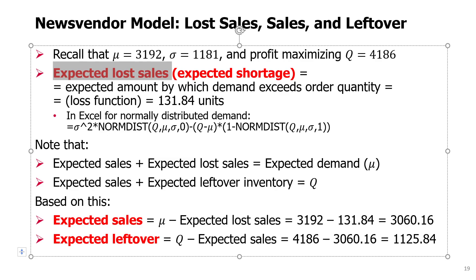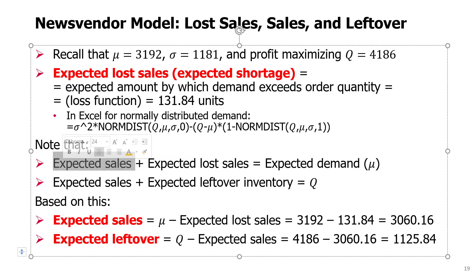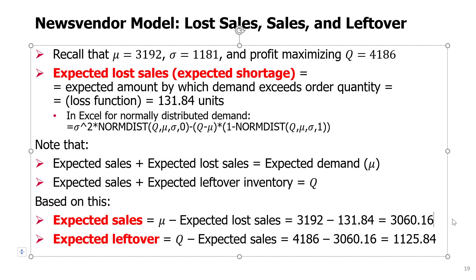Once we get expected lost sales — this is actually the most difficult formula, the rest is relatively easy. If you have a certain demand and some of that demand is lost sales, then the rest must be sales. If I have 1,000 units of demand and I lost 100 units of sales, the remaining 900 must be the sales. The same formula works for expectations: expected sales plus expected lost sales equals expected demand. So we calculate expected sales as average demand minus expected lost sales, giving us 3,060.16.